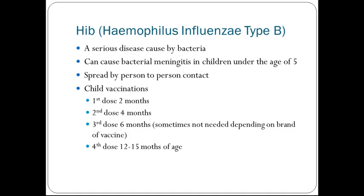Hib, or Haemophilus influenzae type B, is a serious disease caused by bacteria. It can cause bacterial meningitis in children under the age of five and spreads by person-to-person contact. For children, the first dose is generally at two months, the second at four months, the third at six months — though the third dose is sometimes not needed depending on the brand. If a child is given the Pentacel brand, three doses are required. The fourth dose is at 12 to 15 months of age.